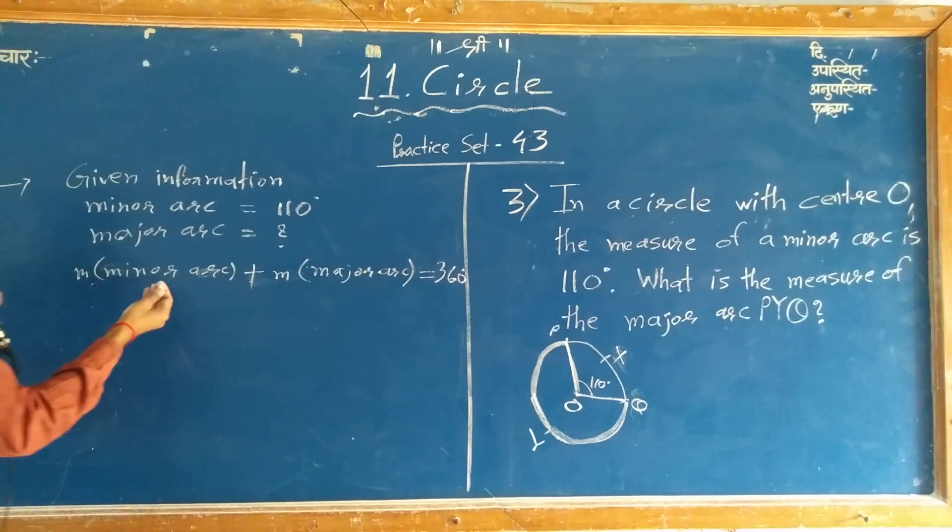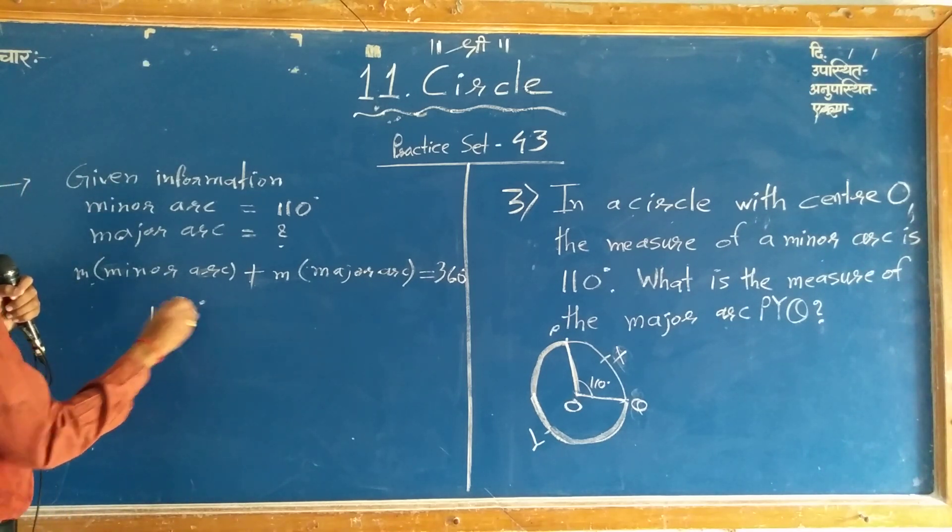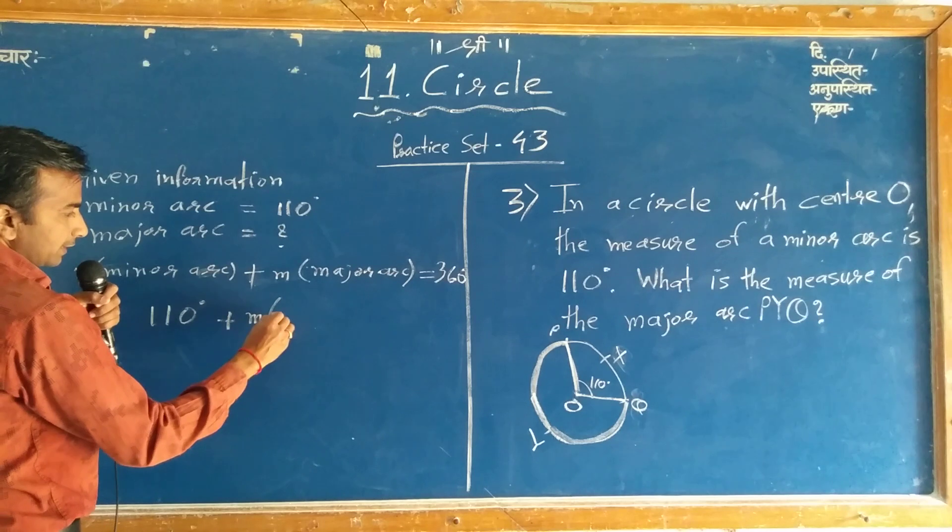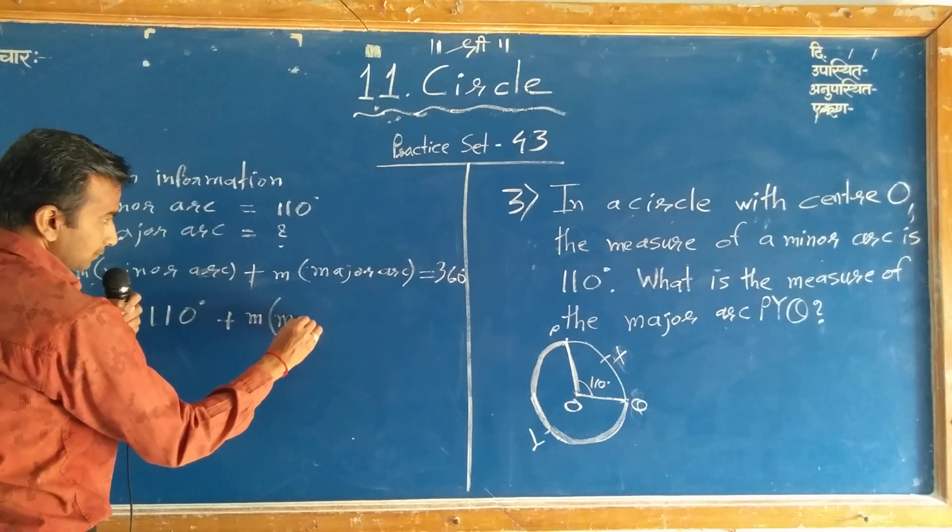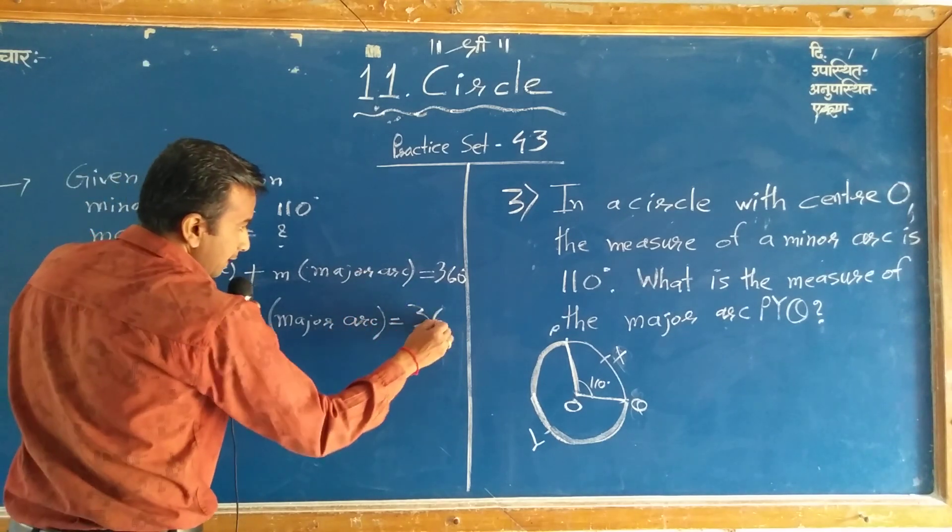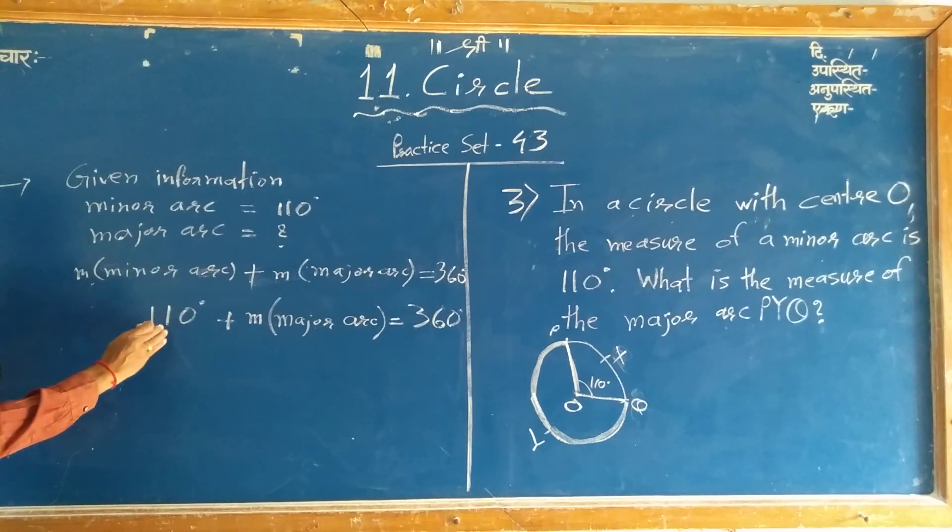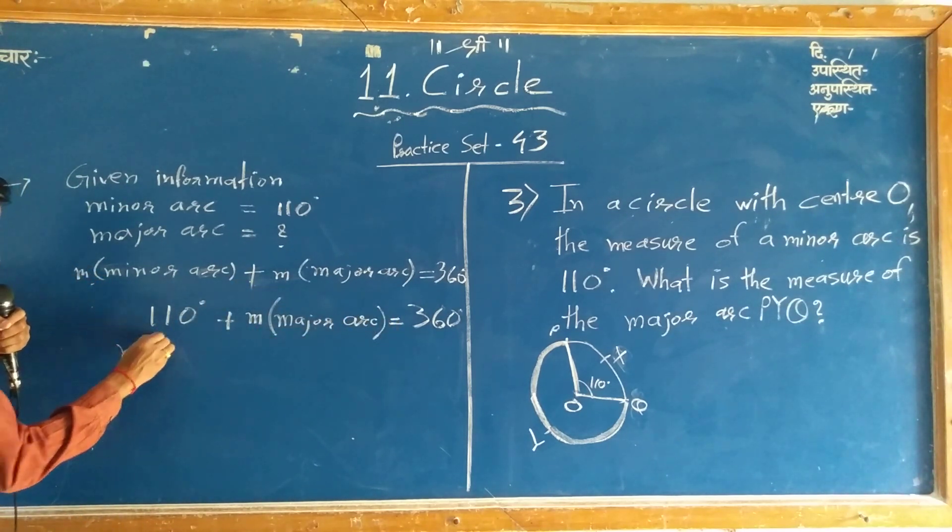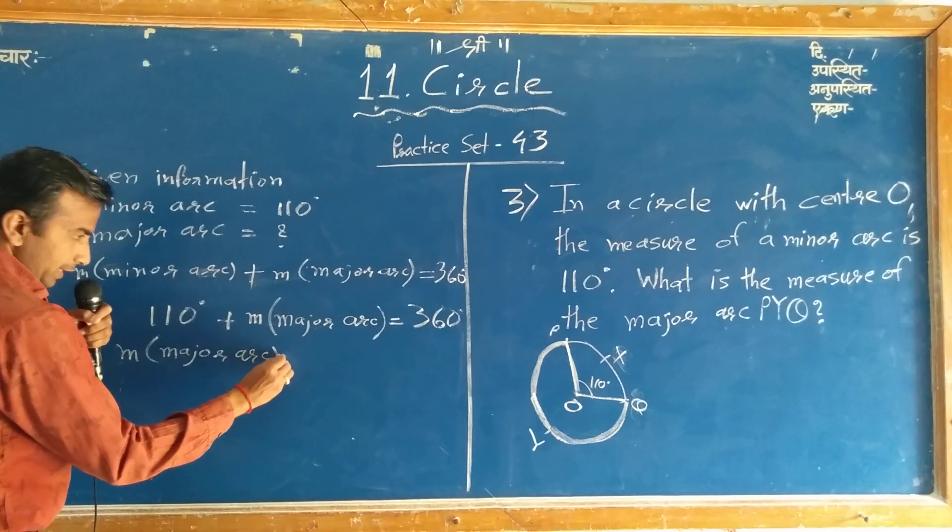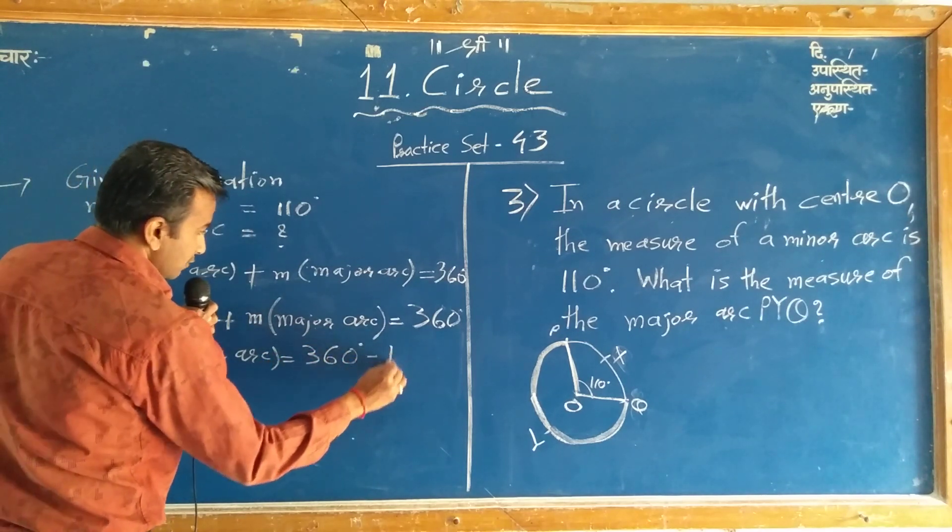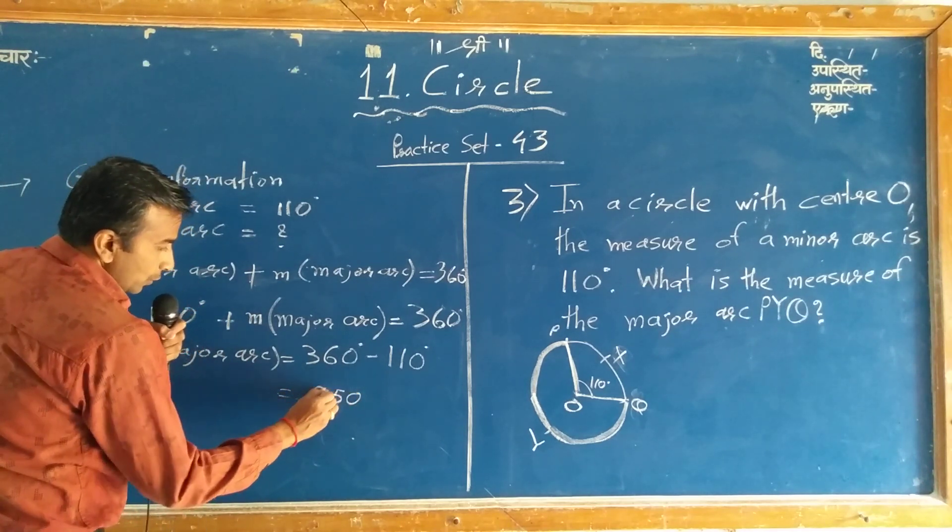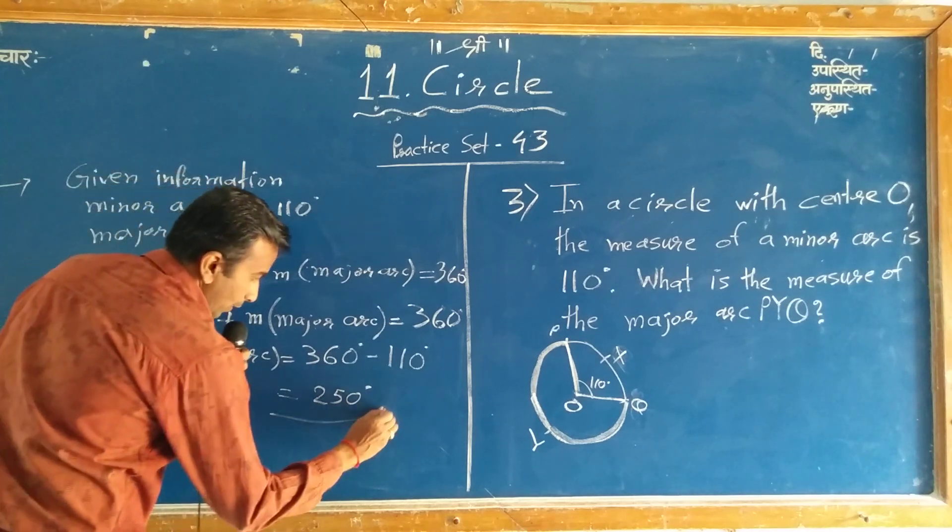The measure of major arc is equal to 360 degrees minus measure of minor arc. The measure of major arc is equal to 360 degrees minus 110 degrees. And if you subtract it, how is it? 250 degrees. This is our answer.